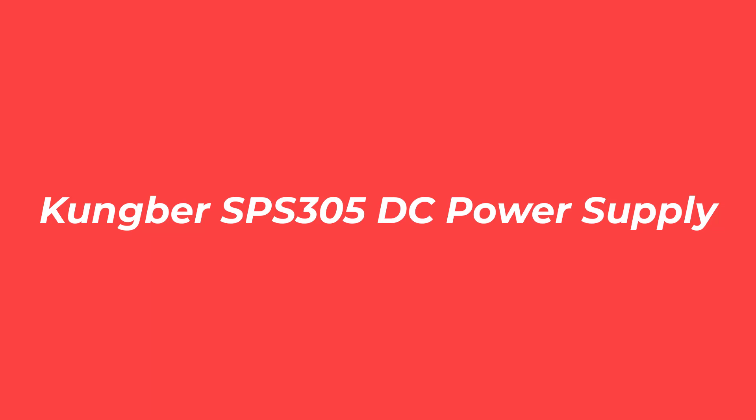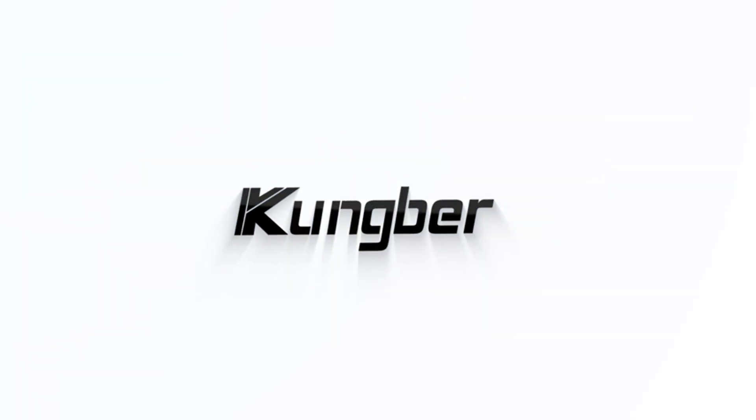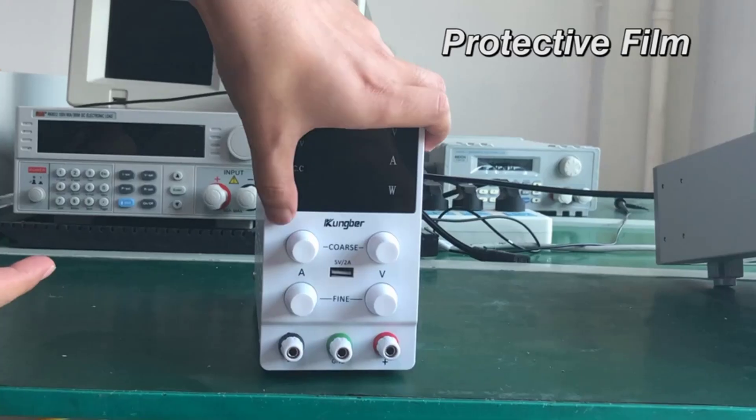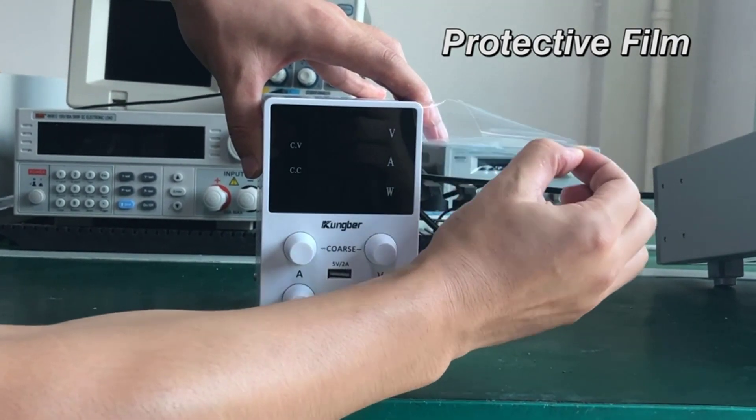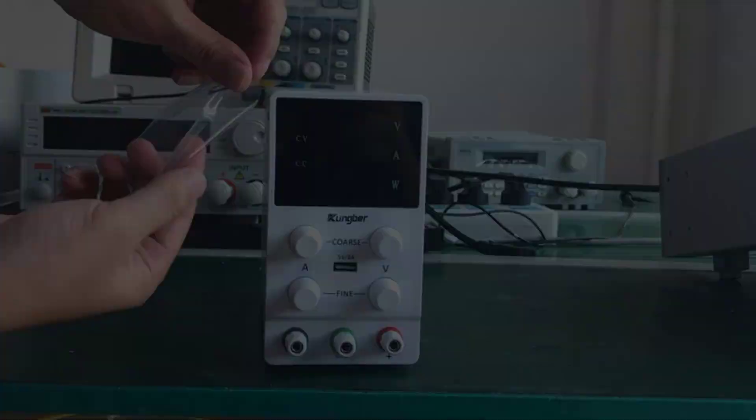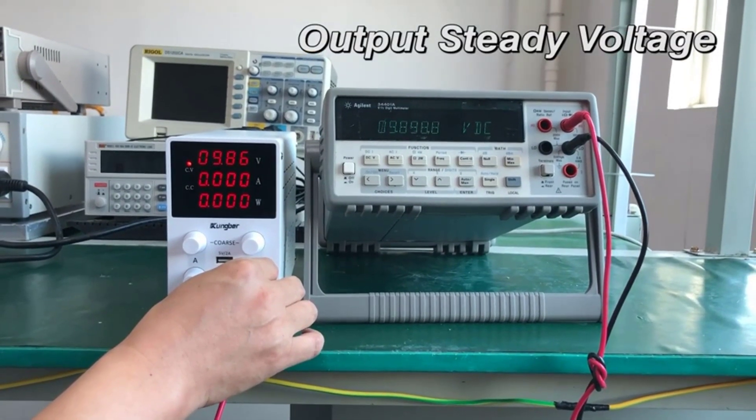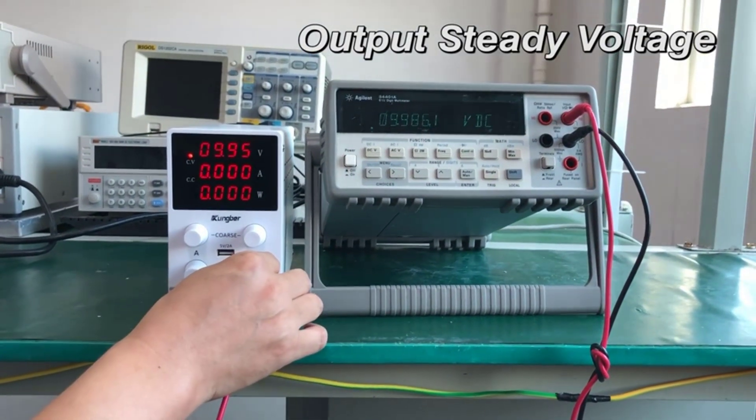Number 2. Kuhnber SPS 5 DC Power Supply. If you are looking for a reliable yet affordable option, definitely consider the Kuhnber SPS 305 DC power supply. It is a switching DC power supply with output voltage adjustable from 0-30V and output current adjustable from 0-5A.